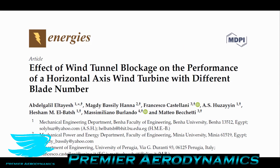In podcast number 39, I talked about wind tunnels and blockage ratios in general. But this podcast talks about wind turbines because they have a very special type of blockage ratio. We're going to look into a paper called 'Effect of Wind Tunnel Blockage on the Performance of a Horizontal Axis Wind Turbine with Different Blade Numbers.' This is an open access paper — you can find it in the link in the description.